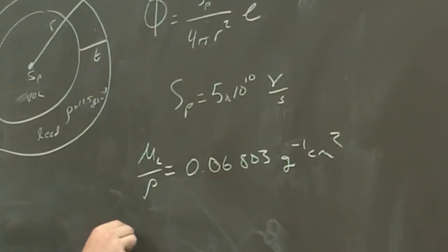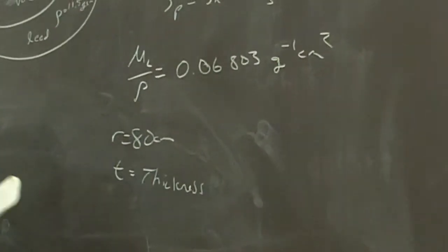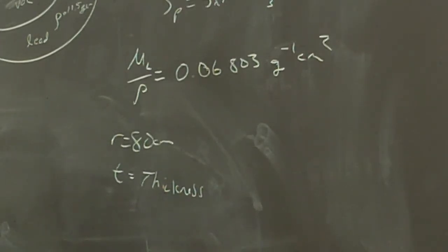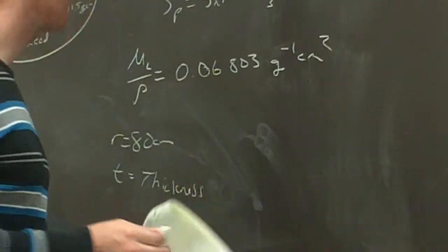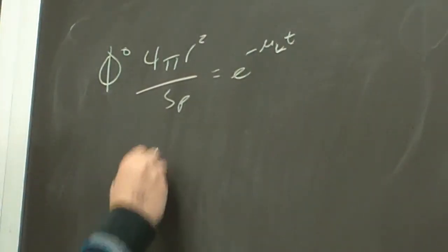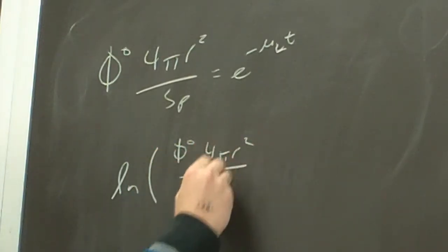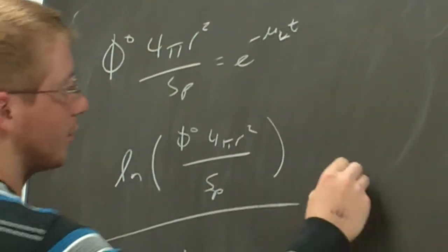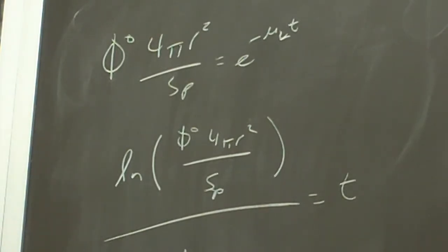And from the problem statement, r equals 80 centimeters and t equals something, thickness. We're solving for that. So then you just rewrite this out and you solve for it. So phi 4 pi r squared over Sp is equal to e to the negative mu L t. So natural log of phi 4 pi r squared over Sp all over minus mu L is equal to t. And you get that.